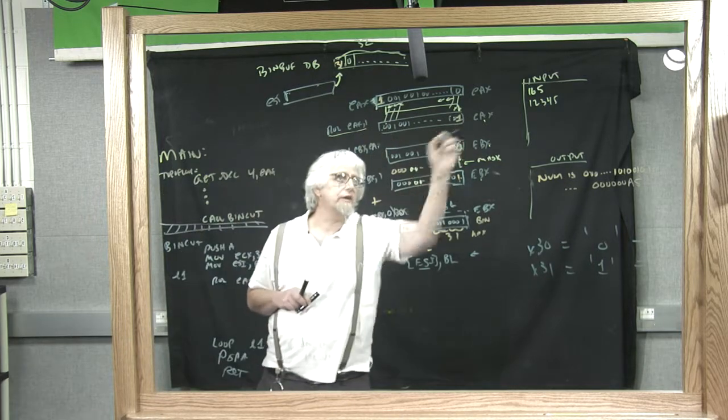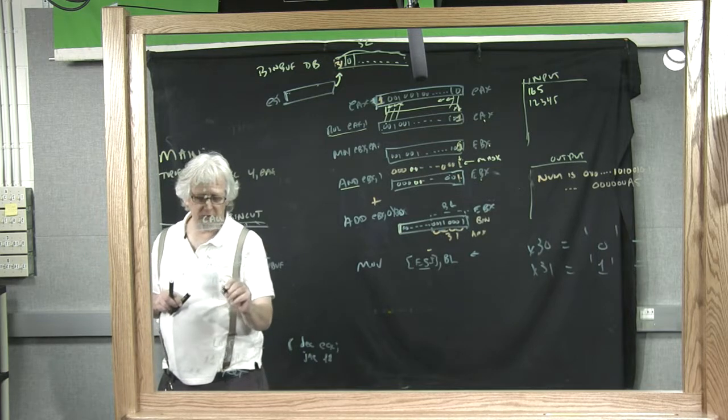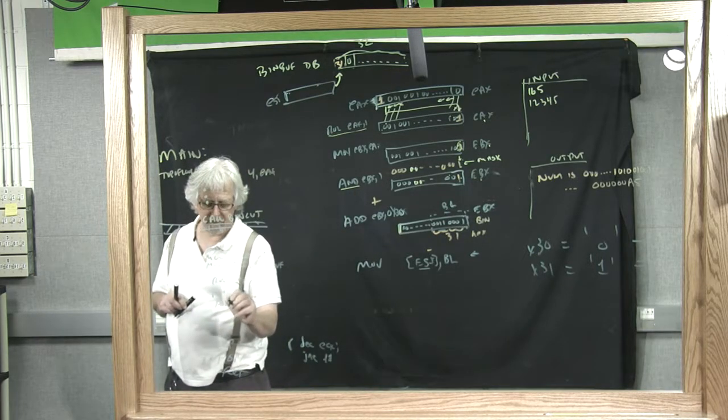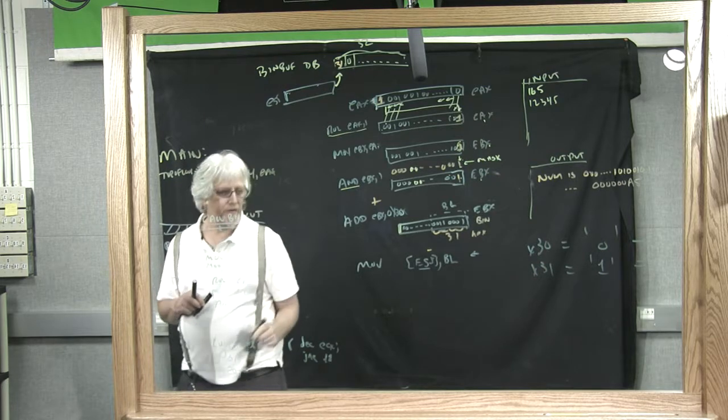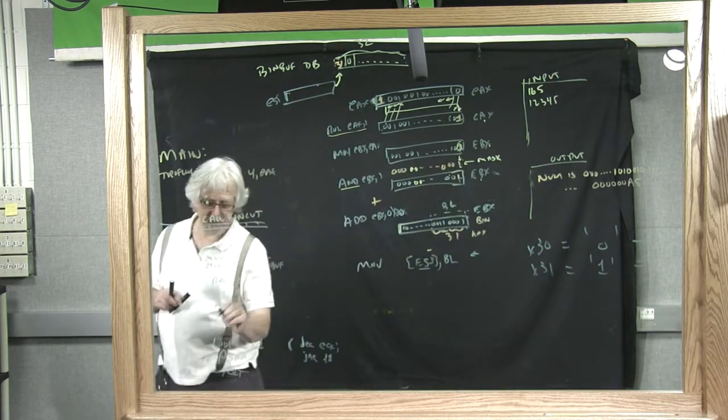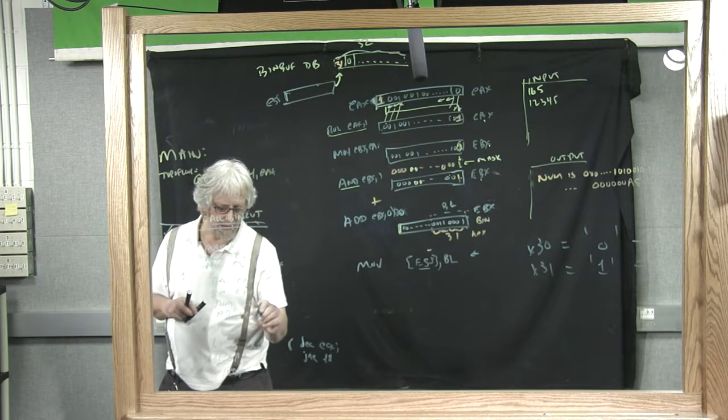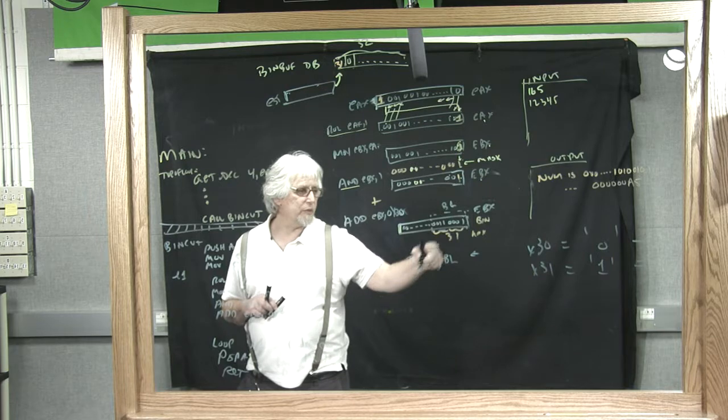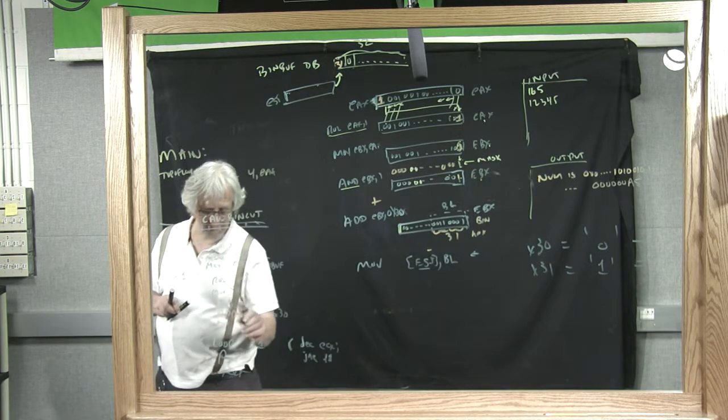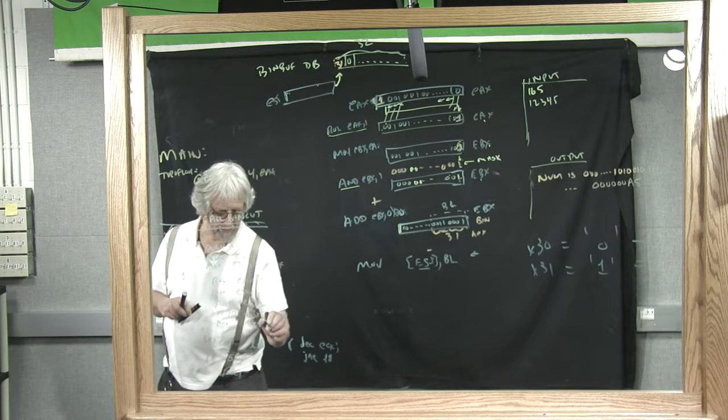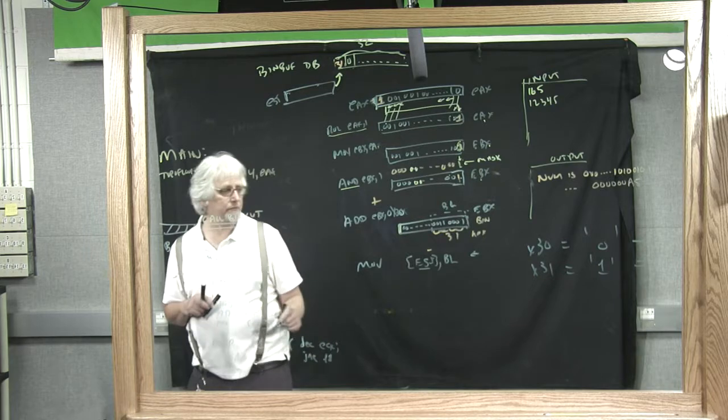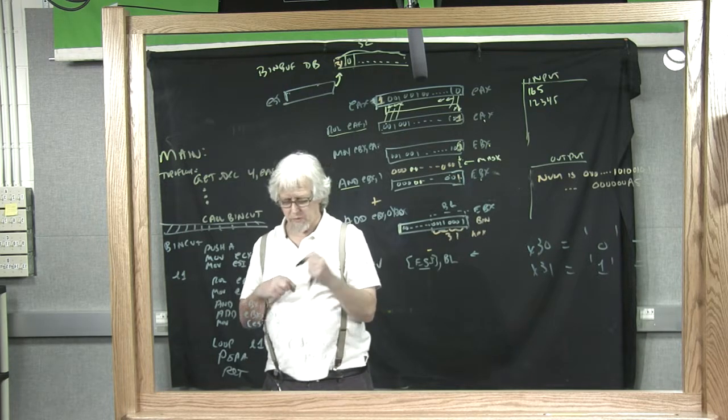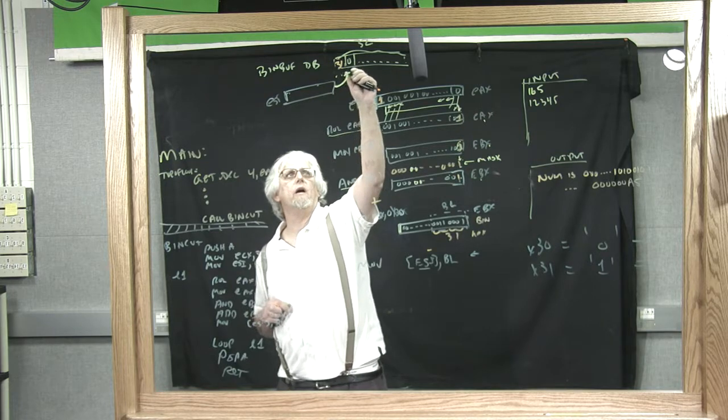Rotate EAX to get the high order bit into there. Move, and to isolate just the lower bit, add to turn it into an ASCII character. Then finally store the resulting ASCII character, just the one byte. Finally, we need to move ESI so that it points to the next spot in memory.